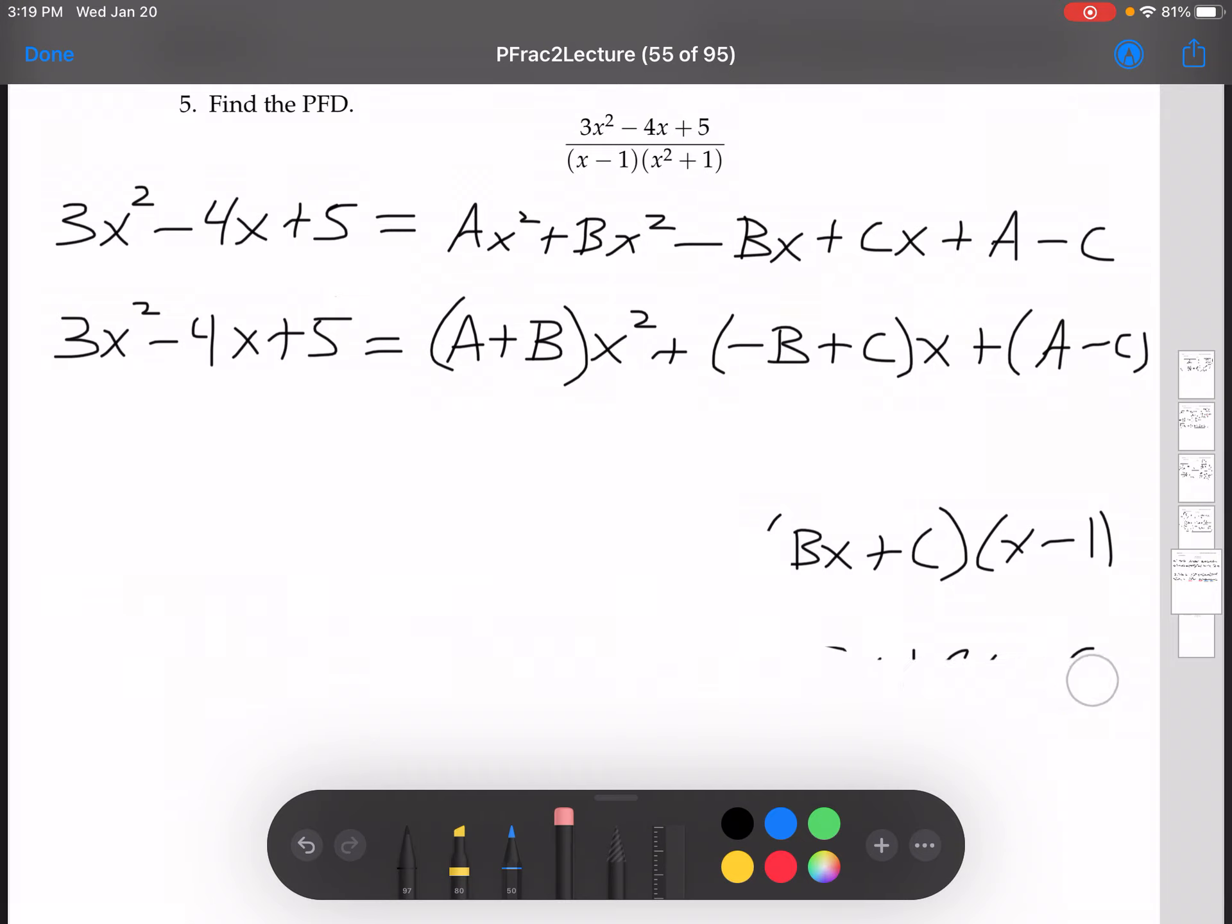Now, remembering that if two polynomials are equal, then that means they must have the same coefficients. That means that the thing in front of the x squared on the left, the 3, must be equal to the thing in front of the x squared on the right, so a plus b. The thing in front of the x on the left, negative 4, must be equal to negative b plus c. The thing without an x on the left, 5, must be equal to a minus c. So that tells us that a plus b equals 3, negative b plus c equals negative 4, and a minus c equals 5.